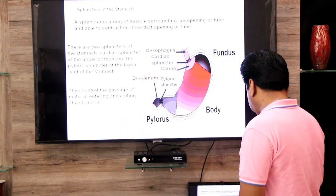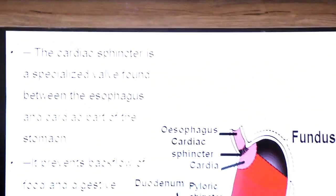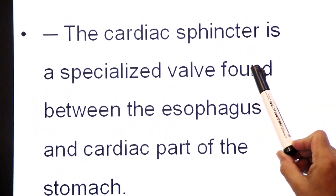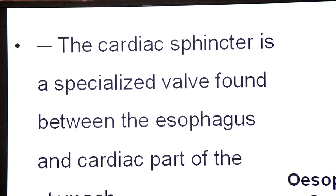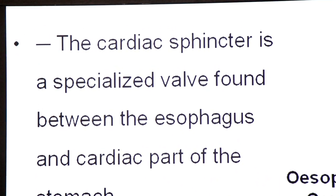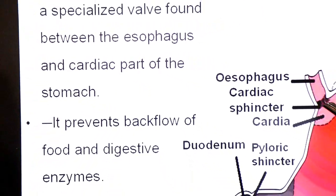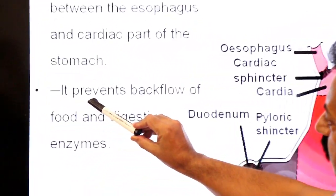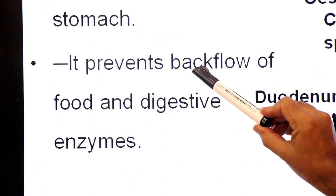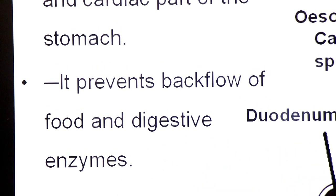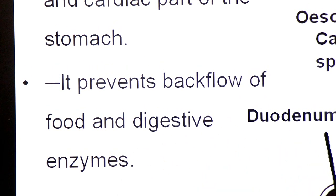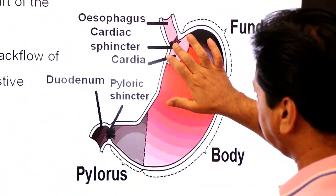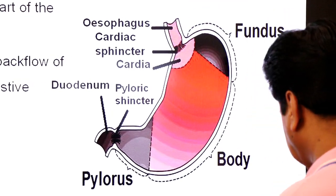Now let's define the cardiac sphincter. The cardiac sphincter is a specialized valve found between the esophagus and the cardiac part of the stomach. Its function is to prevent backflow of food and digestive enzymes. Jab stomach mein partial digestion hota hai food ka, toh ye sphincter close hota hai taake food ki backflow na ho esophagus mein.